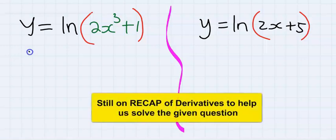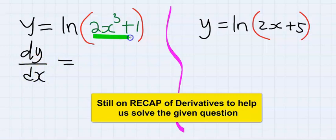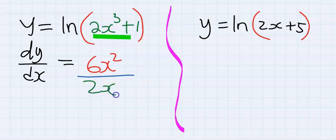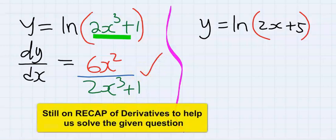dy/dx will be equal to, first I will differentiate this which will give me 6x squared. Next I will bring down the whole question without the ln, and this is my answer. Also,